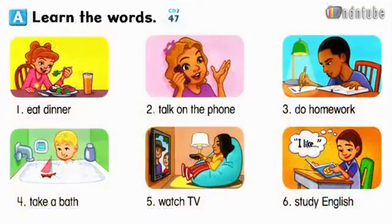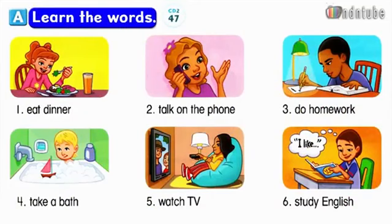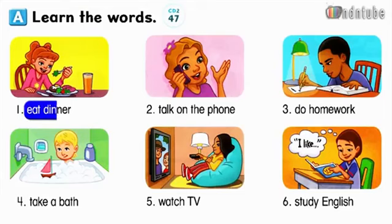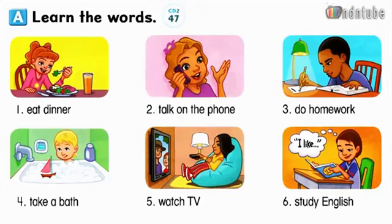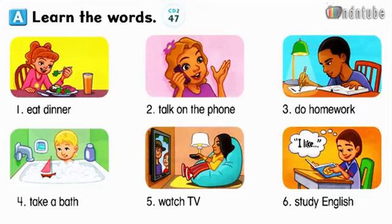Page 62. Let's learn more. A. Learn the words. Number 1: Eat dinner. Number 2: Talk on the phone. Number 3: Do homework. Number 4: Take a bath. Number 5: Watch TV. Number 6: Study English.